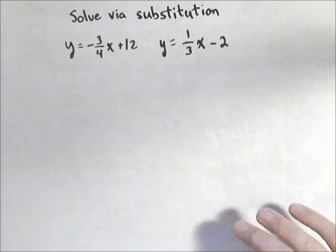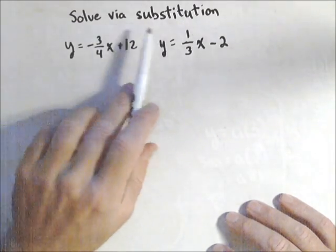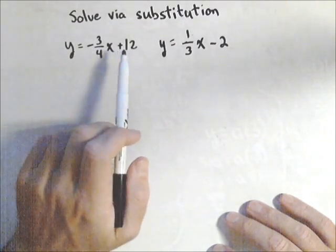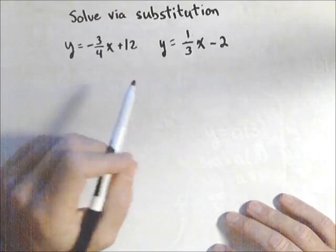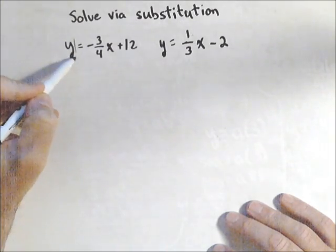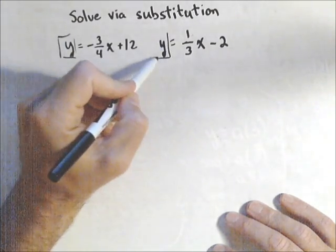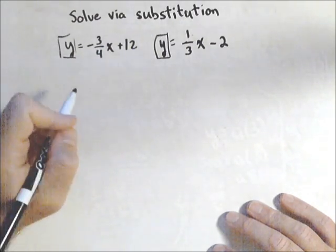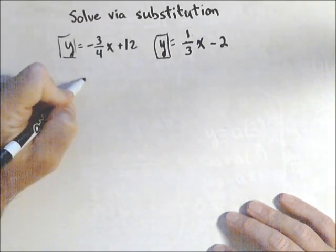In this video we're going to take a quick look at solving a system via substitution when we have fractions involved. So what I notice is I've already got both equations solved for y. Now those are going to be the same y, so what I can do in this case is just set them equal to each other.